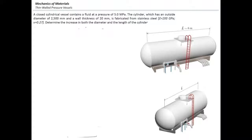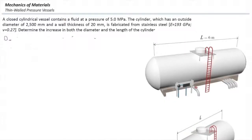This is a typical strain problem for pressure vessels. First, I'll write down the data: external diameter is 2,500 mm, wall thickness is 20 mm, and pressure is 5 megapascals.